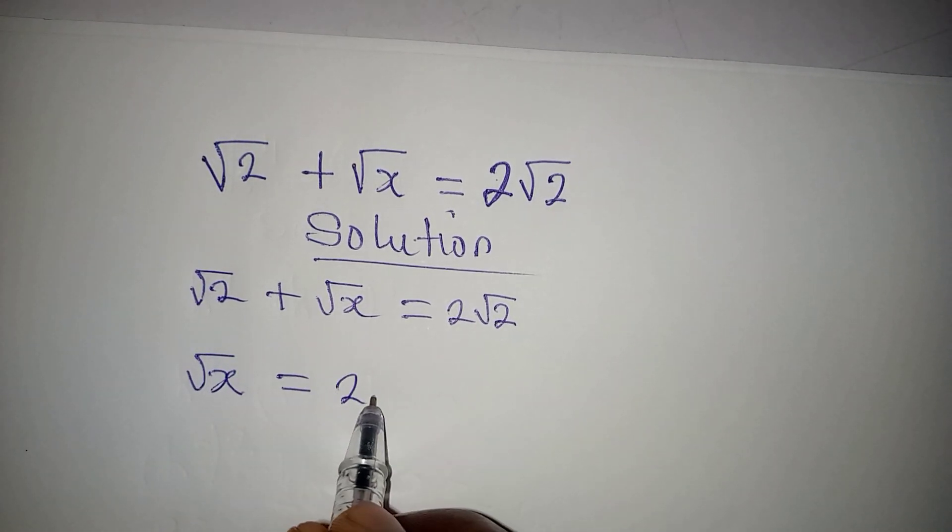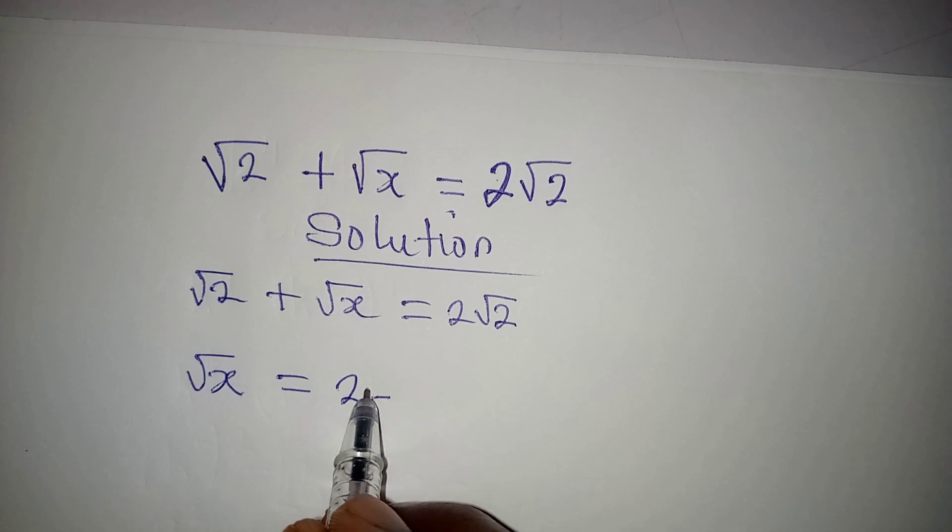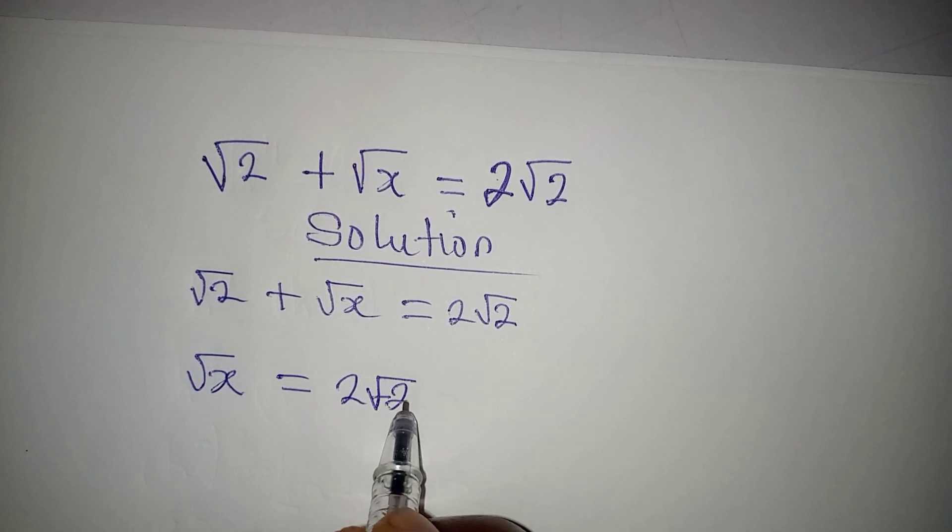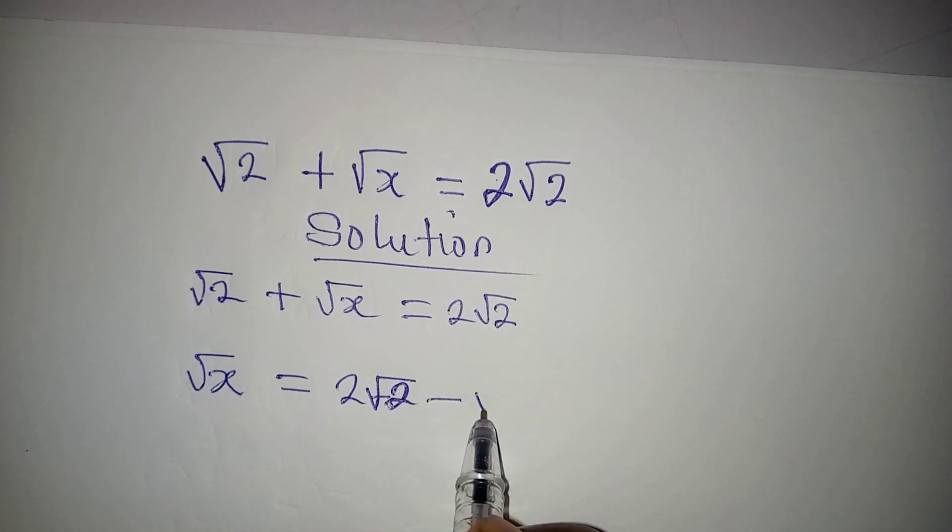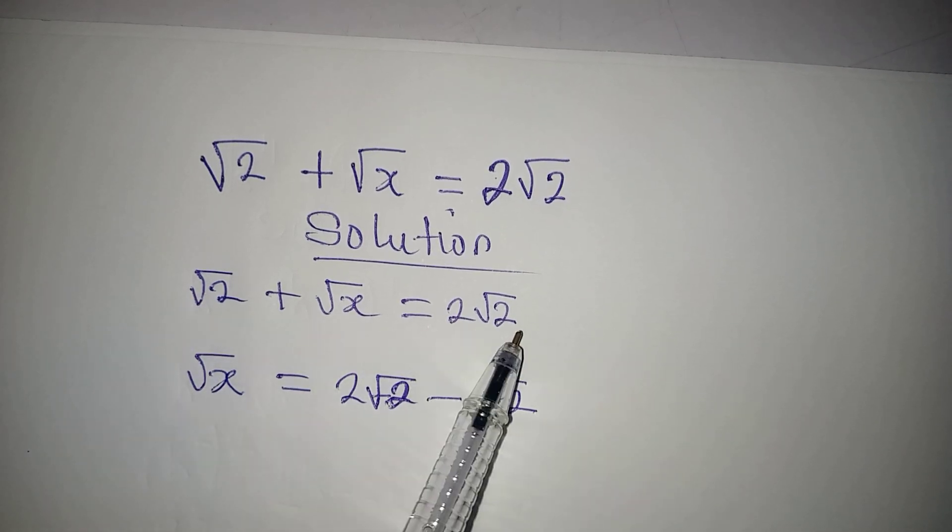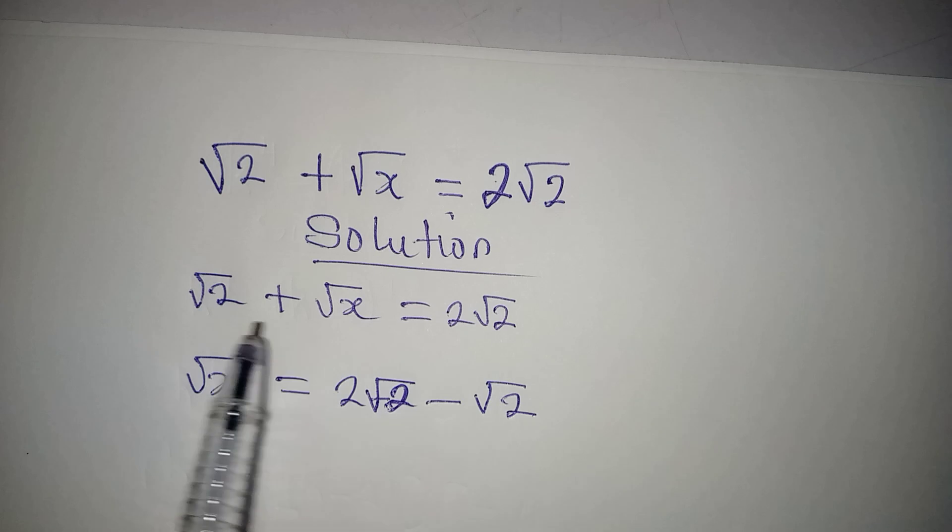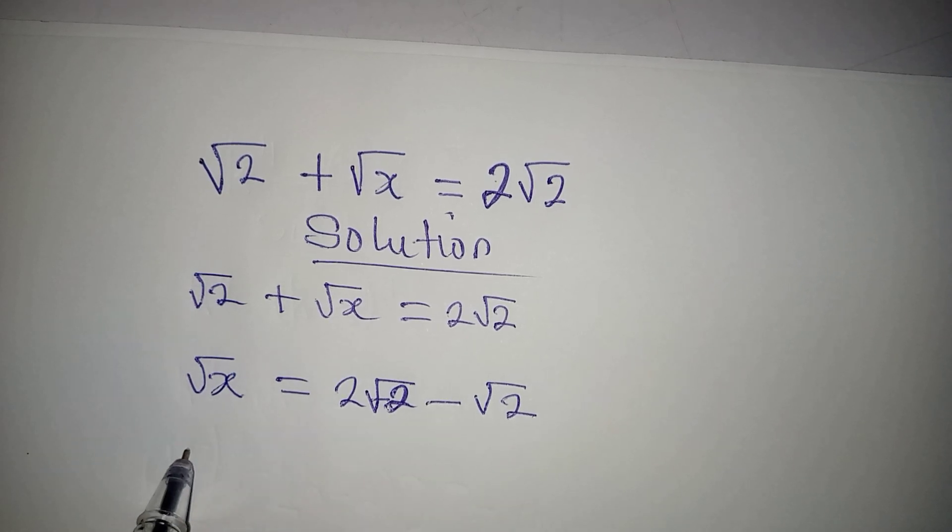...equal to 2 minus, okay, this is 2 square root of 2 minus square root of 2. What I've done is to take this to the other side, so it's gonna be root 2, root 2 minus root 2.